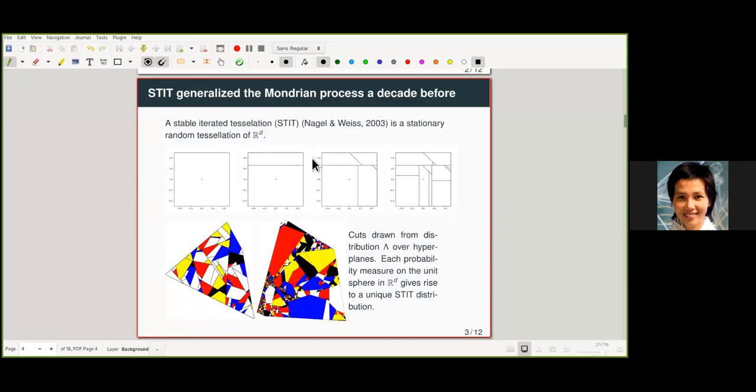So the Mondrian process, that exact process with the name Mondrian appeared in the machine learning literature 2014. But unknown to them, this was, of course, already generalized by stochastic geometry 10 years before. So a stable iterative tessellation was proposed by Nagel and Weiss in 2003 as a model for a formation of cracks in the plane or in Rd. So it is a stationary random tessellation of Rd.